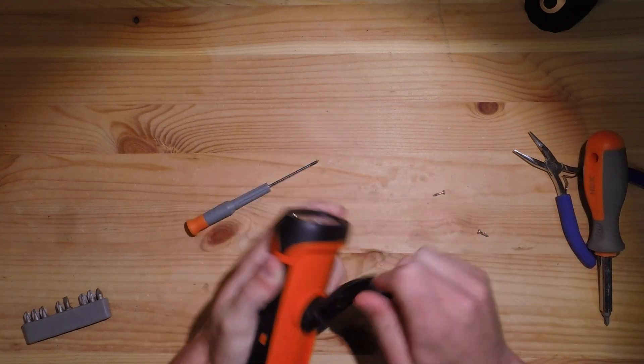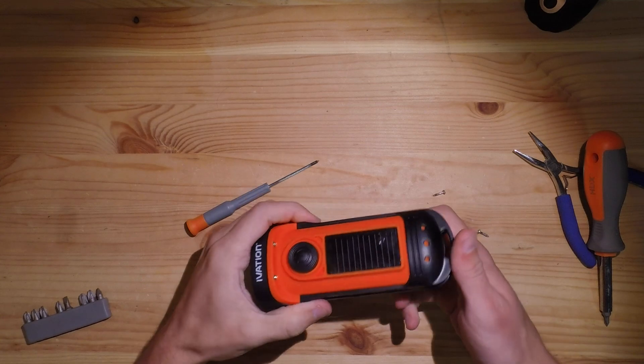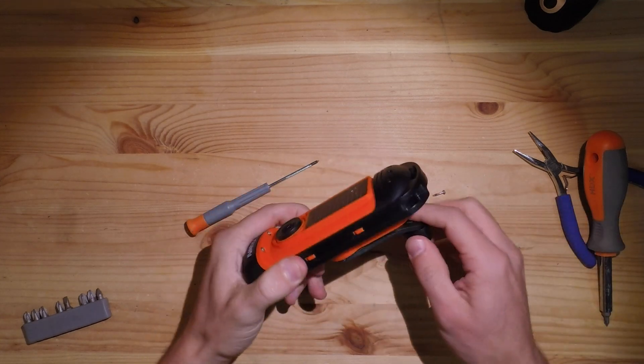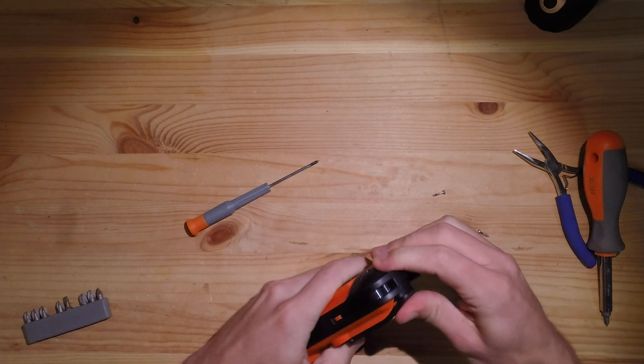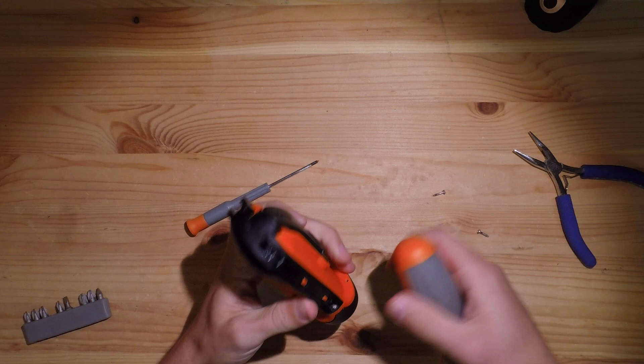This crank flashlight also has a solar panel, so I'm interested to know if there's any sort of special circuitry that you need in order to charge one battery with two different power sources.